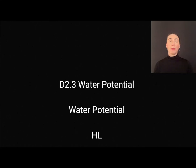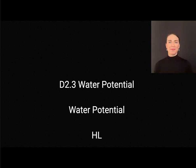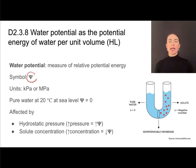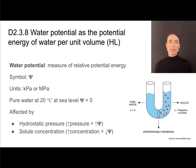This is a video for D2.3 on water potential — higher level content related specifically to water potential. Water potential is a measure of relative potential energy, symbolized by the Greek letter psi (ψ). It is measured in either kilopascals or megapascals depending on relative abundance of that potential, and pure water at 20 degrees Celsius at sea level has a water potential of zero.